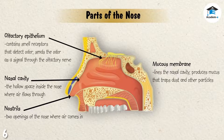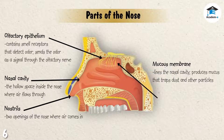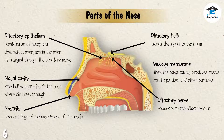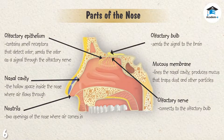The olfactory epithelium contains smell receptors that can detect odor, which it sends as a signal through the olfactory nerve. The olfactory nerve connects to the olfactory bulb, which sends the signal to the brain. The brain then interprets the signal as the odor that we recognize.